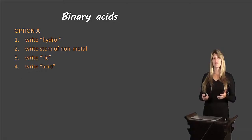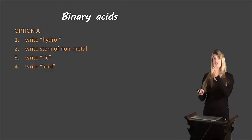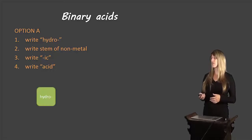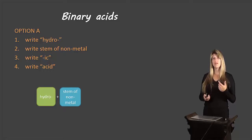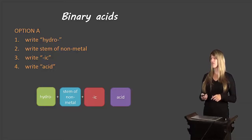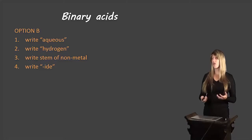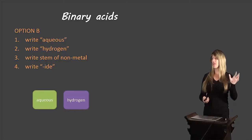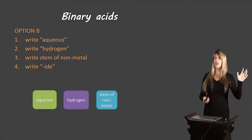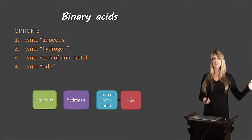Let's talk about our binary acids first — how do we name these? There are two different methods. The first: write the prefix 'hydro,' add the stem of the non-metal, add the suffix '-ic,' then write the word 'acid.' The second option: write the word 'aqueous,' then 'hydrogen,' then the stem of the non-metal with the suffix '-ide.'